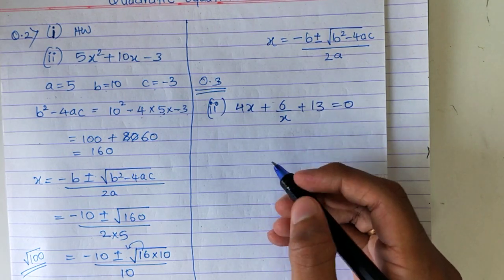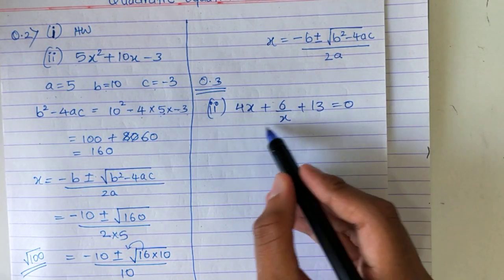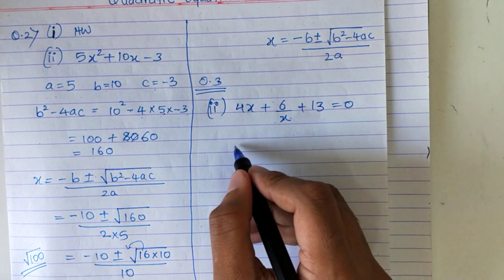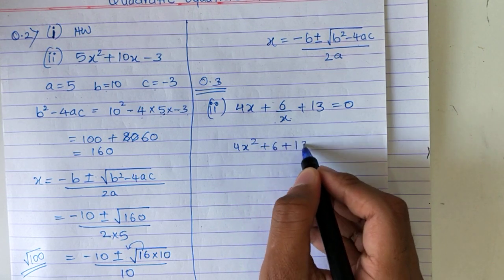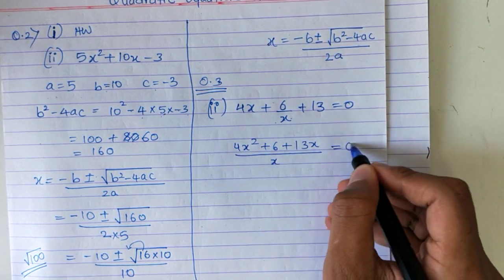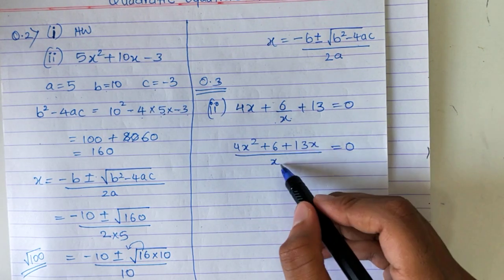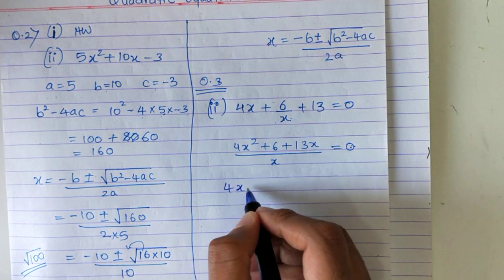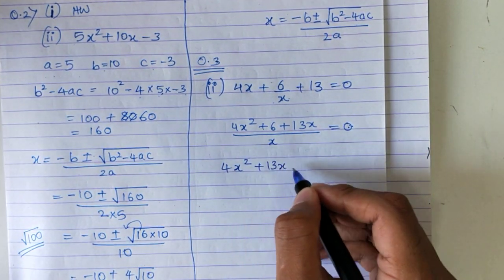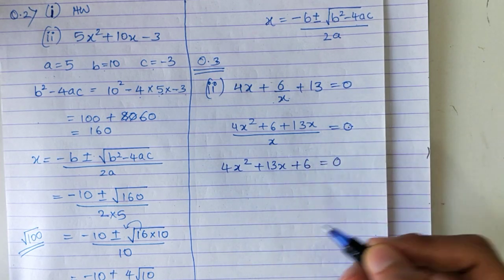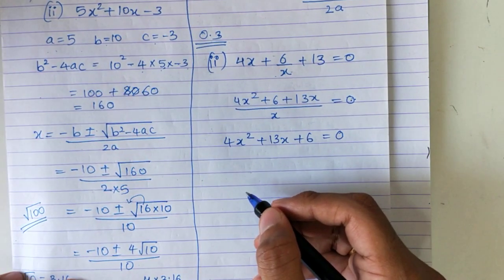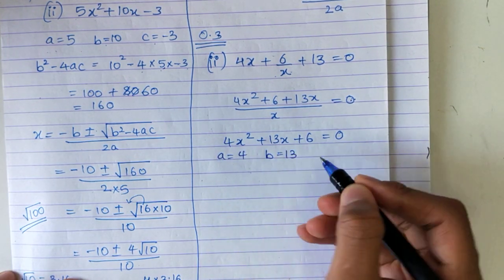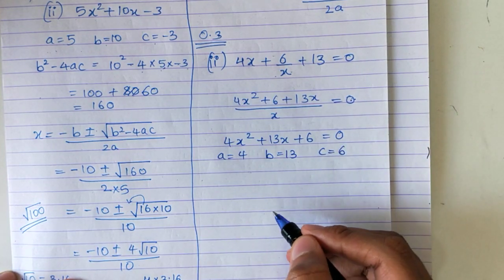I'll take LCM here, so this x will get multiplied with these two terms. This will become 4x squared plus 6 plus 13x upon x equals 0. When x goes over, 0 into x is 0, so what remains is 4x squared plus 13x plus 6 equals 0. Now a is 4, b is 13, and c is 6.